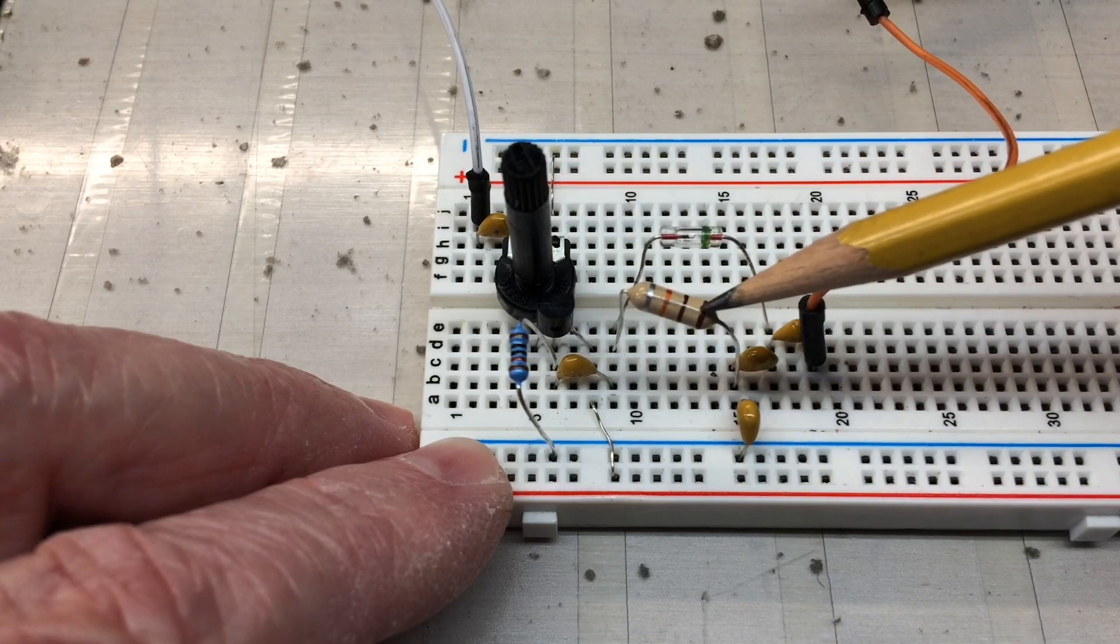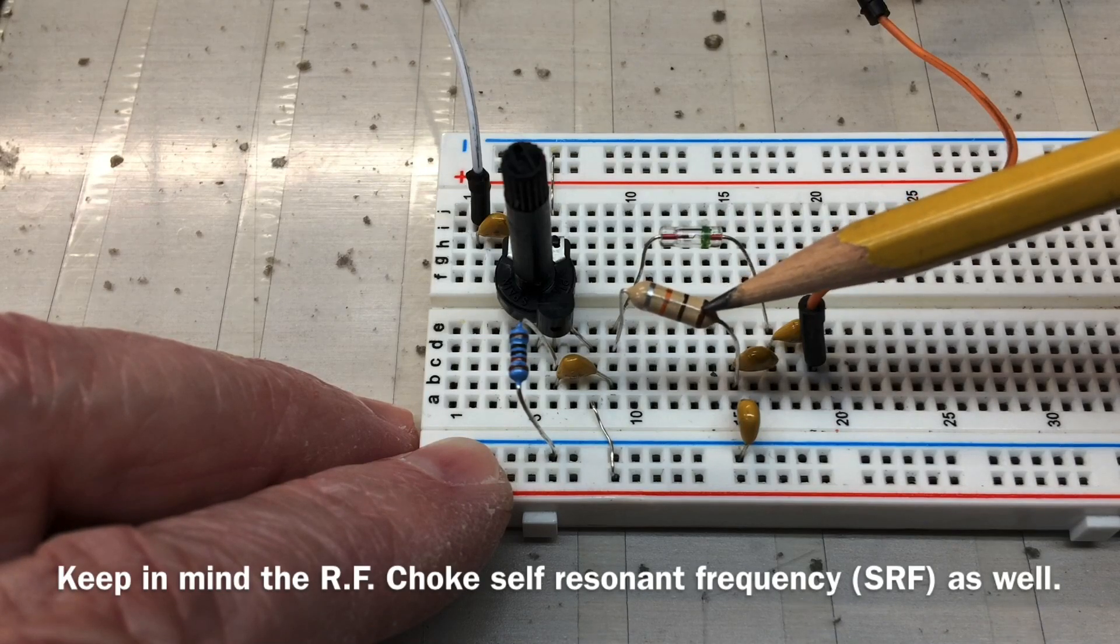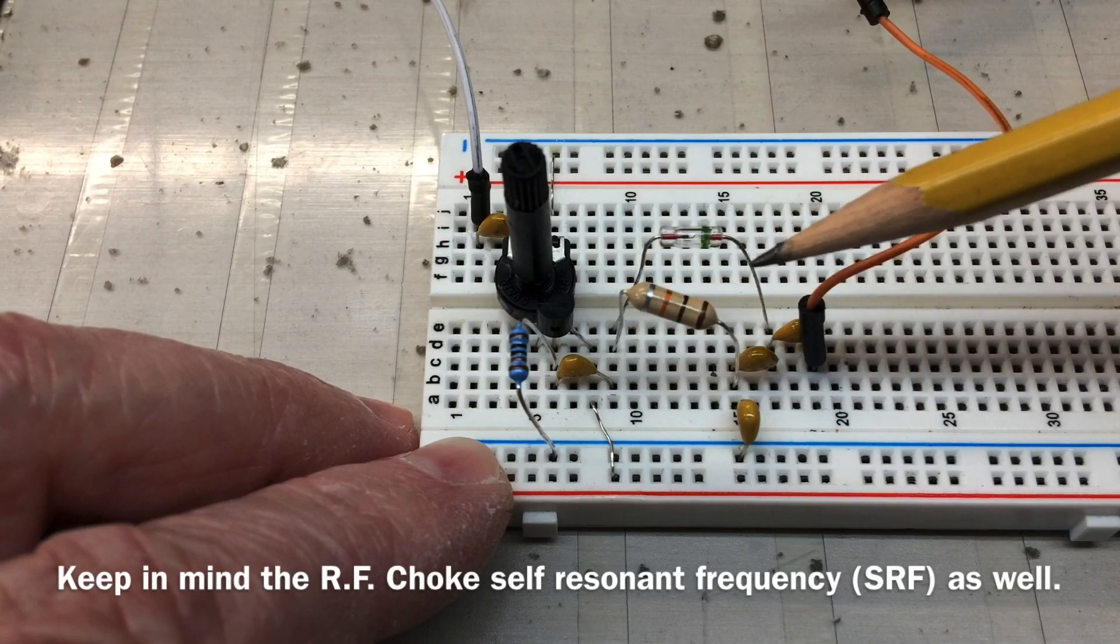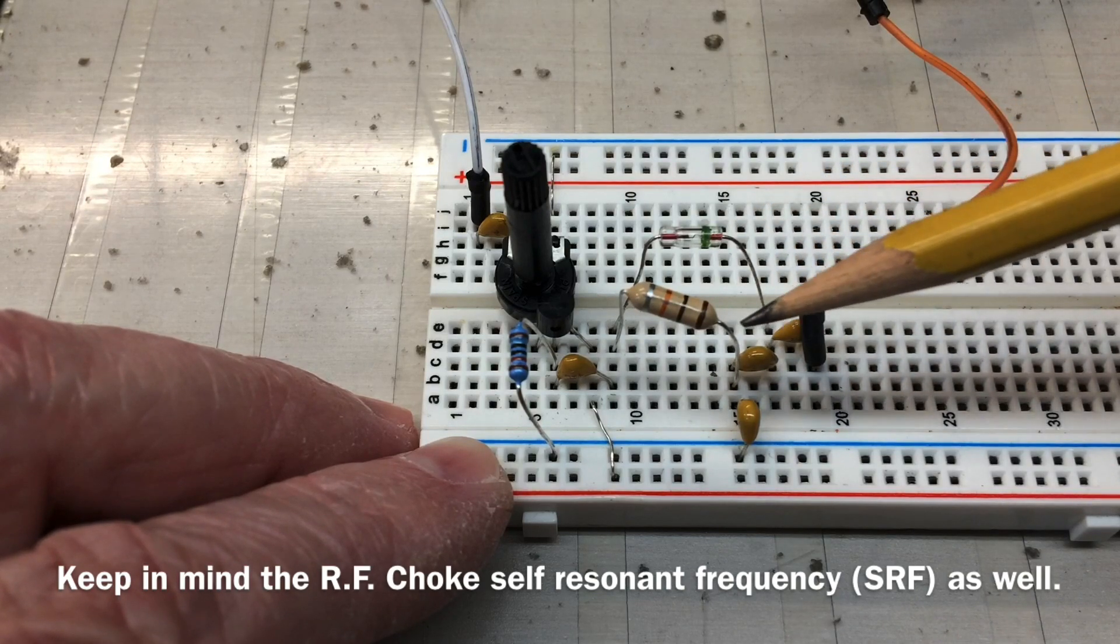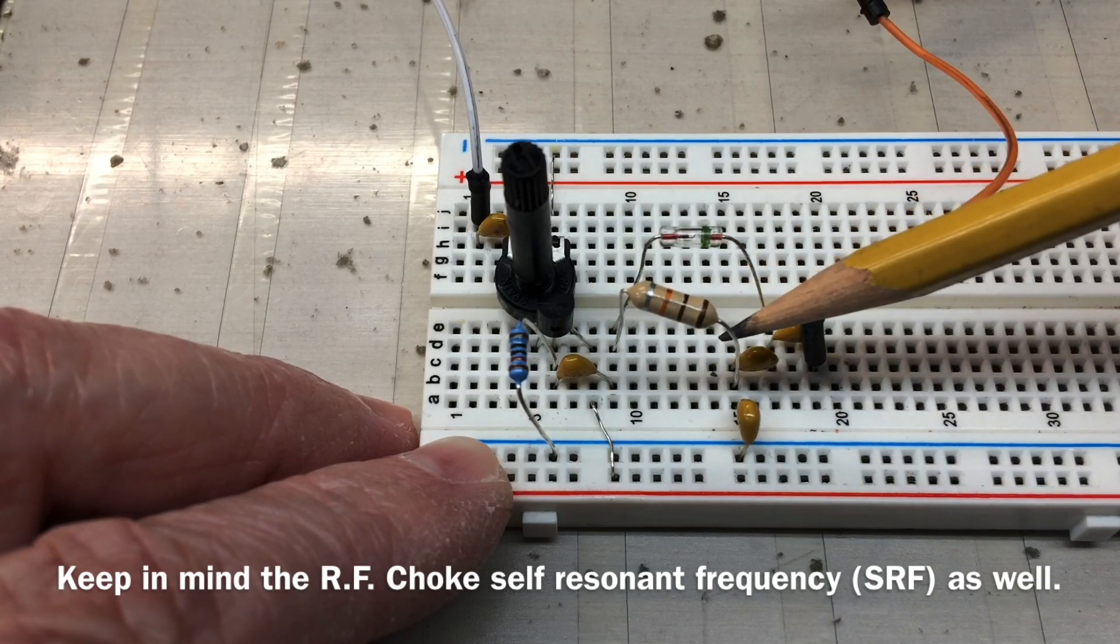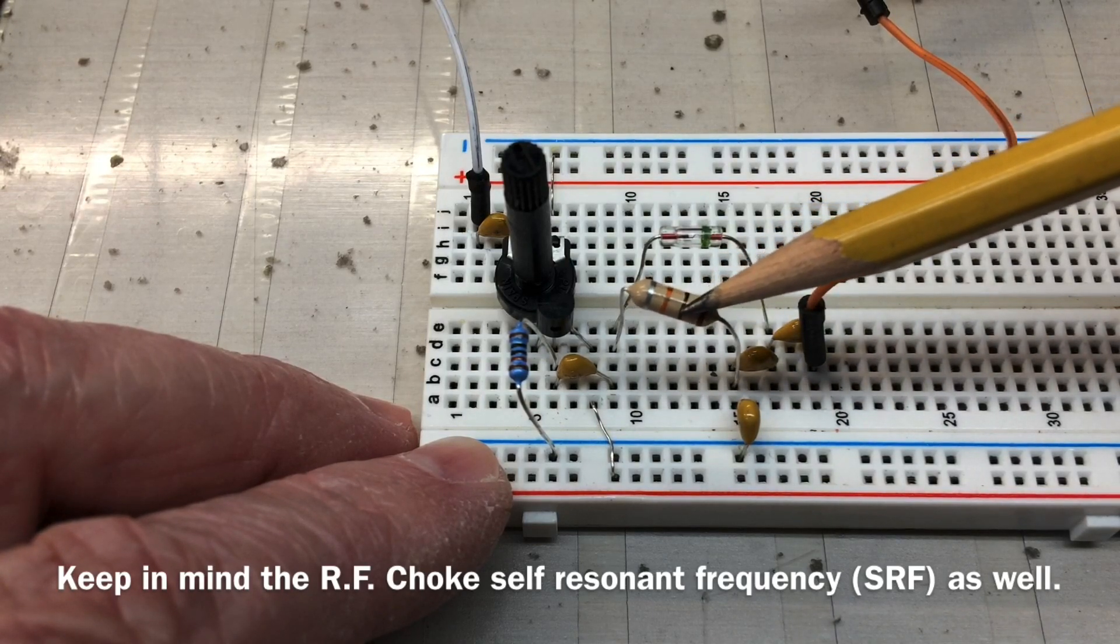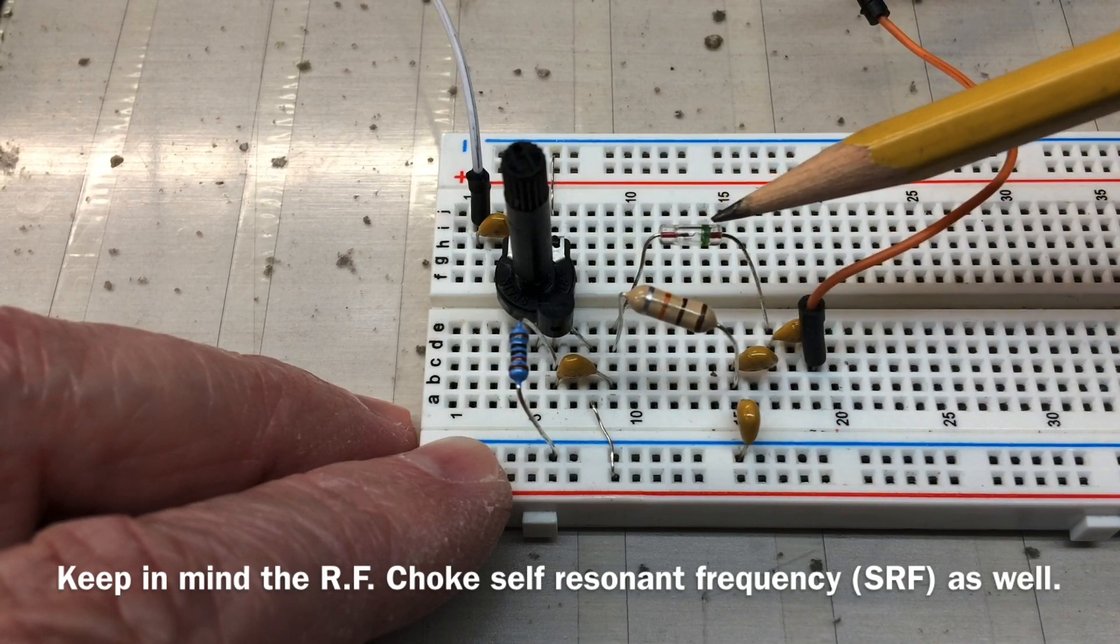So that's how simple the design is. The 1N34A, the 10 milli Henry choke. If I chose an RF choke with less value, more of the RF frequencies of course would sneak in. So I can get below 400 kilohertz, around 300 kilohertz or so, before this design itself is impaired by RF signals not allowing the demodulation to occur properly.